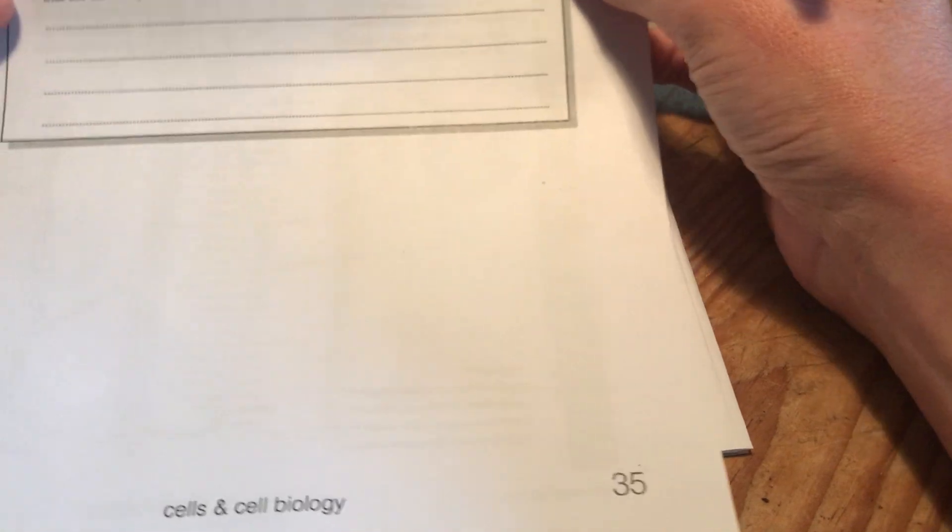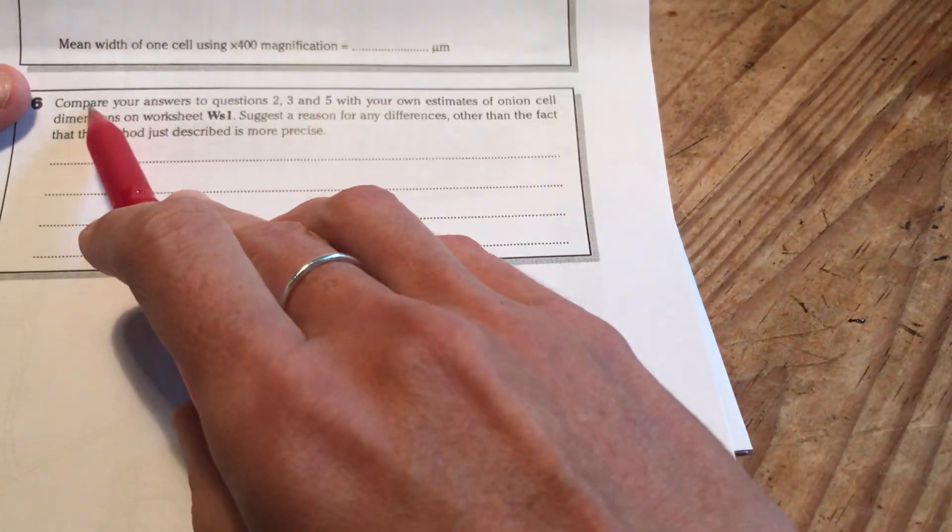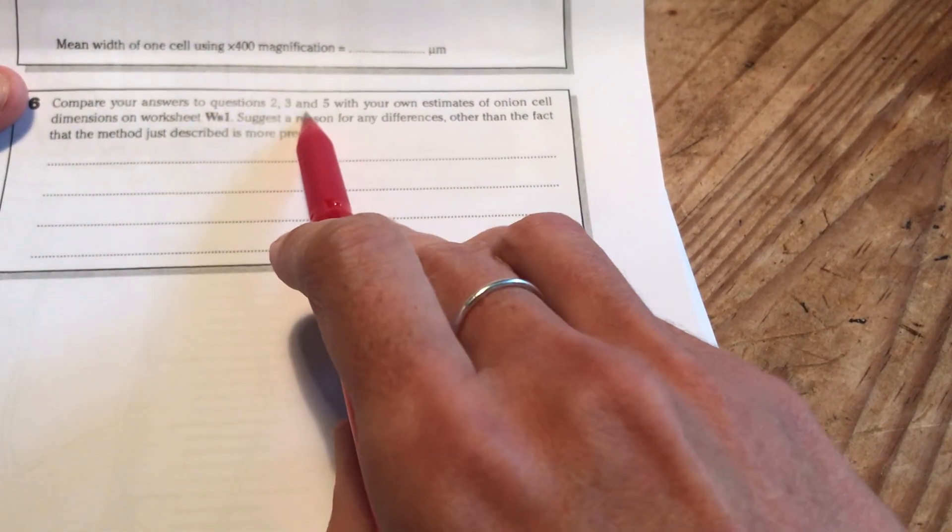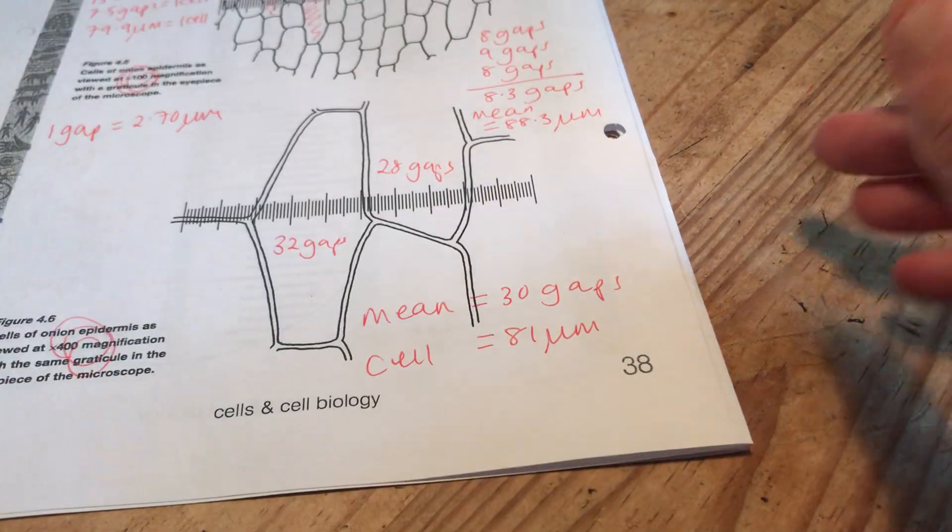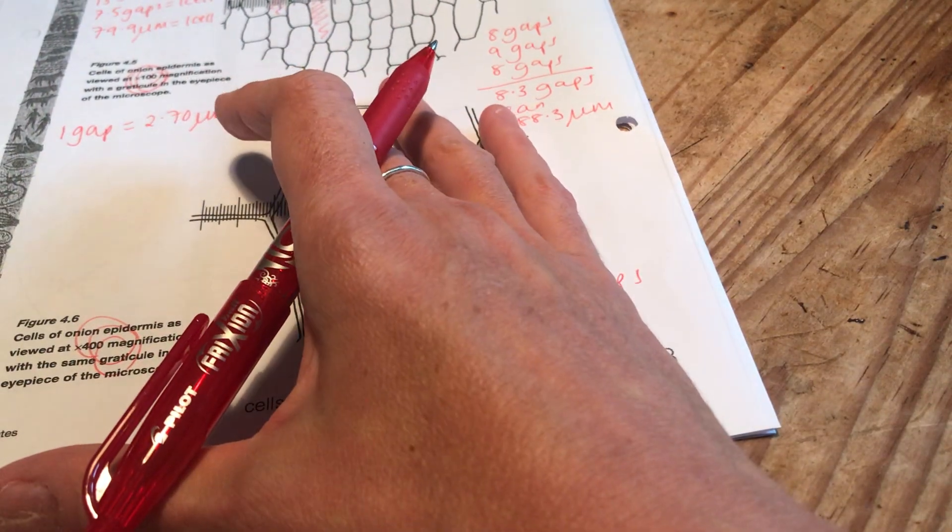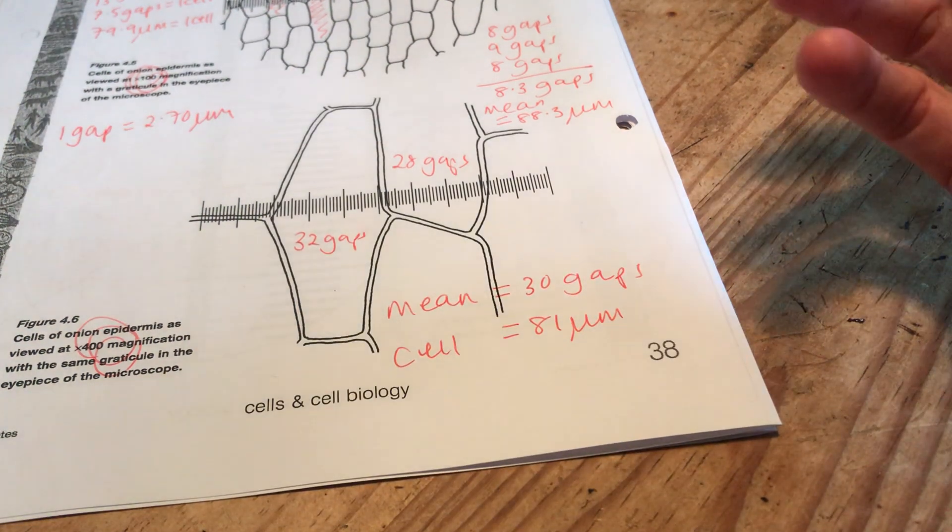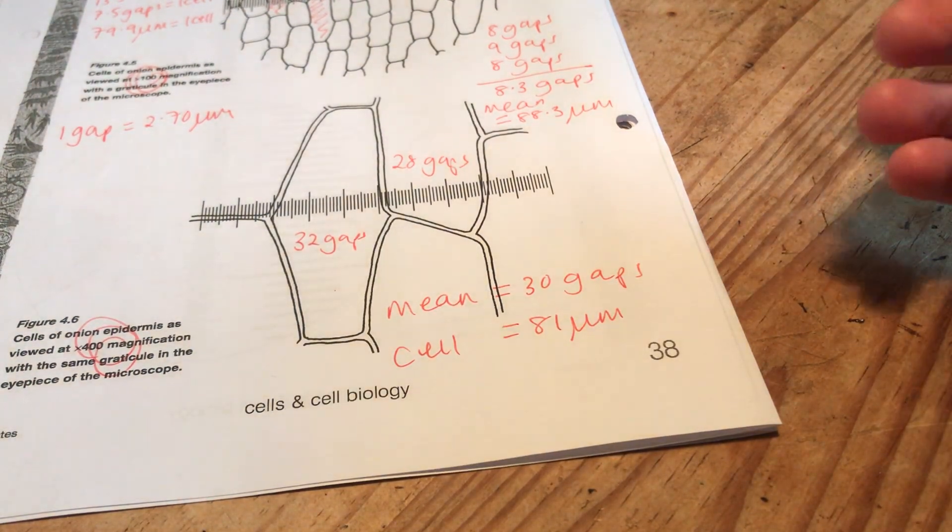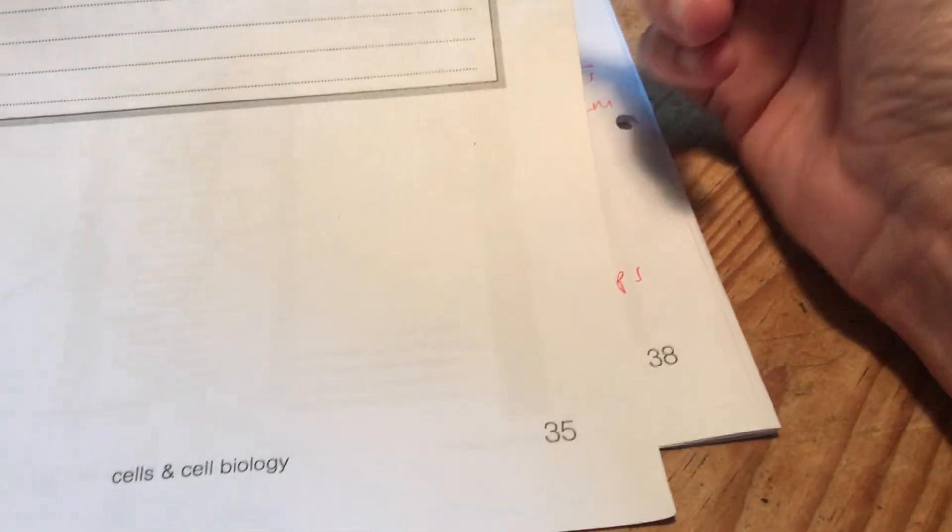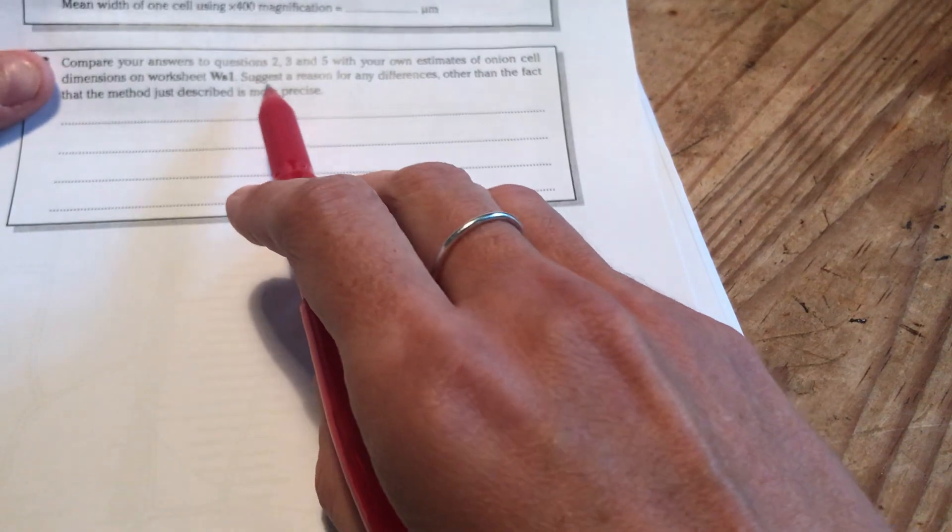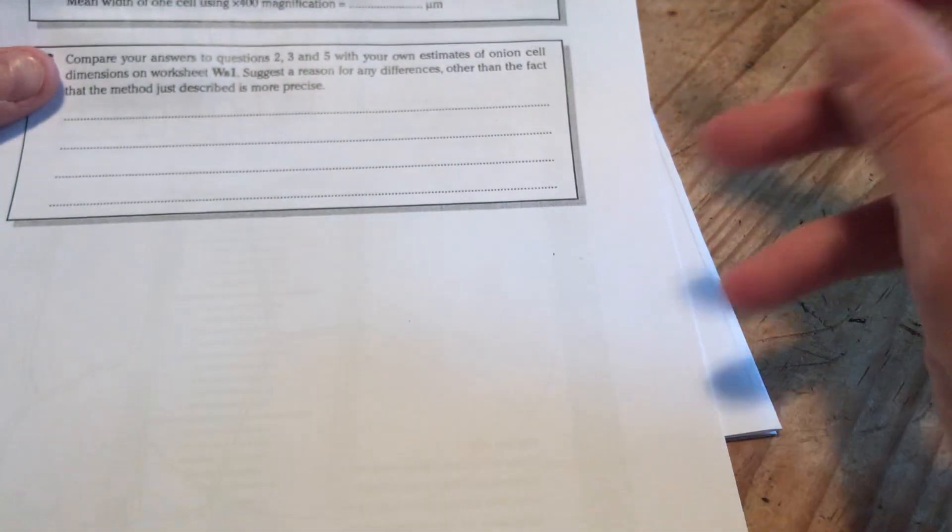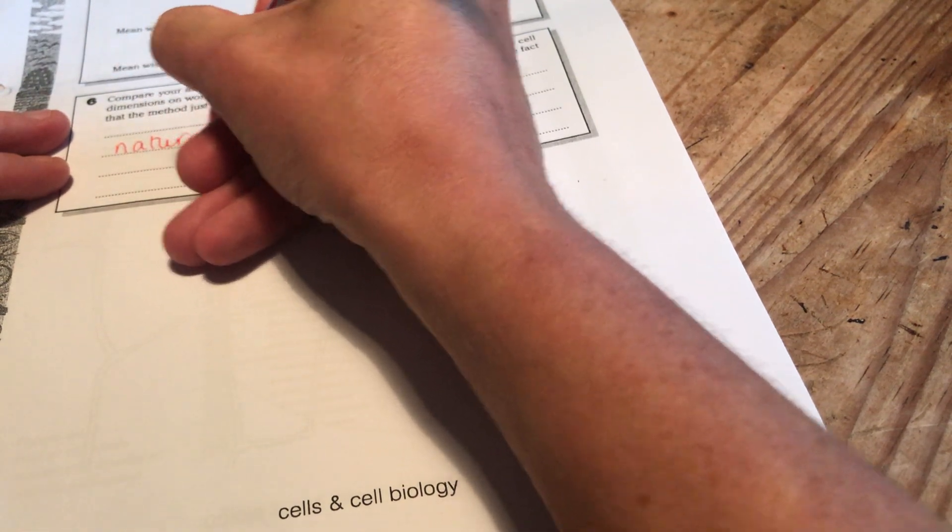And then finally on your sheet, some of you missed this out because you couldn't remember one of the lengths that you did. Compare your answers to all of these different questions. Questions 2, 3 and 5 and your own estimates. These are all questions about the width of a cell, or the length of a cell. So it's basically saying, why are they all different? Why is it that every cell gives you, or every method gives you a different length? So the key really is this term natural variation.